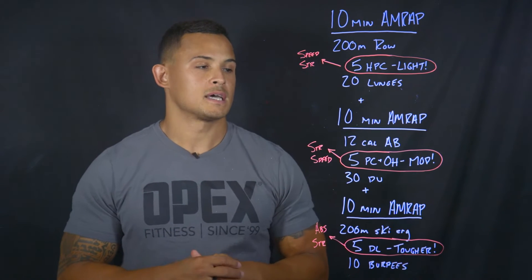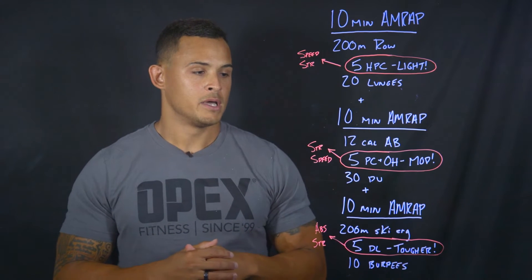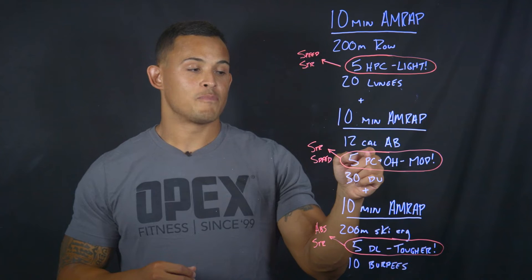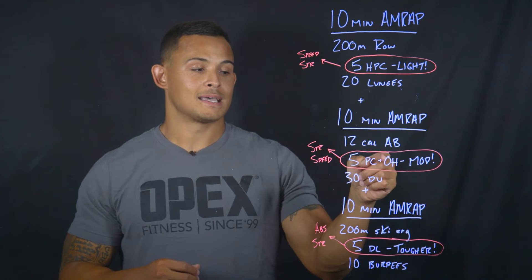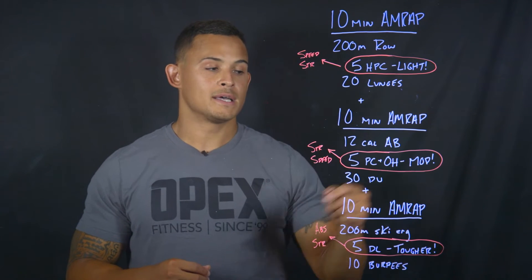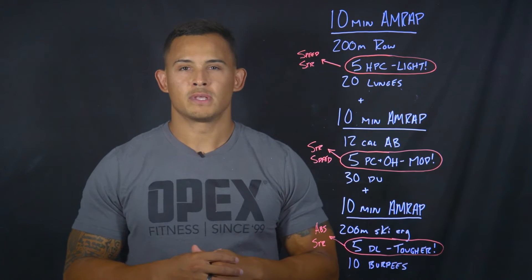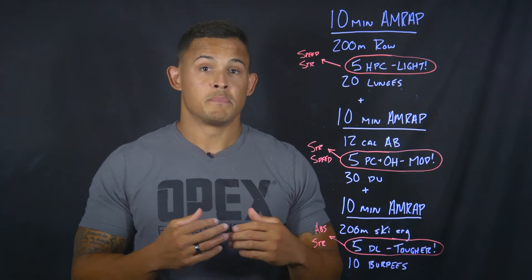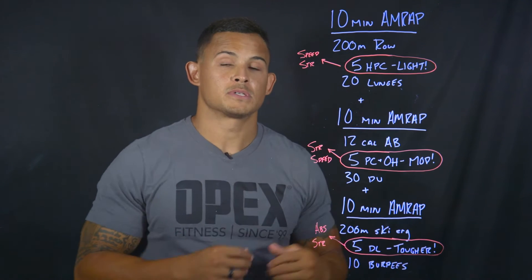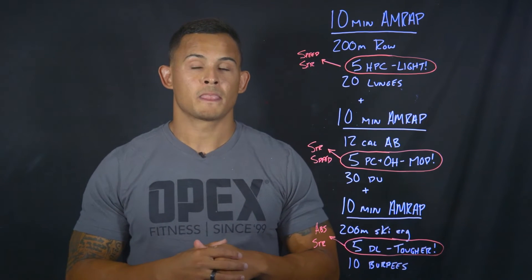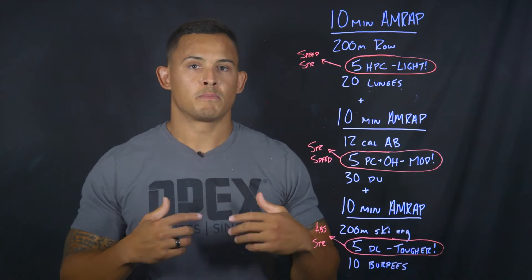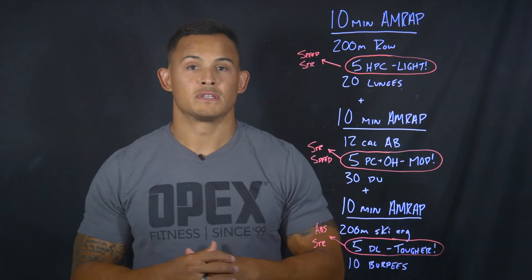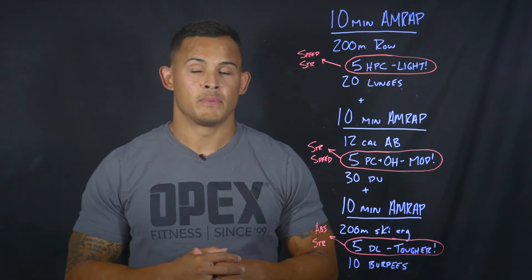Moving to the second 10-minute AMRAP, the contraction we're focusing on is five power cleans and two overheads at a moderate load — think maybe 60, 65, maybe even 70 percent of your client's one rep max. Now we're focusing on strength speed inside of this 10-minute AMRAP.